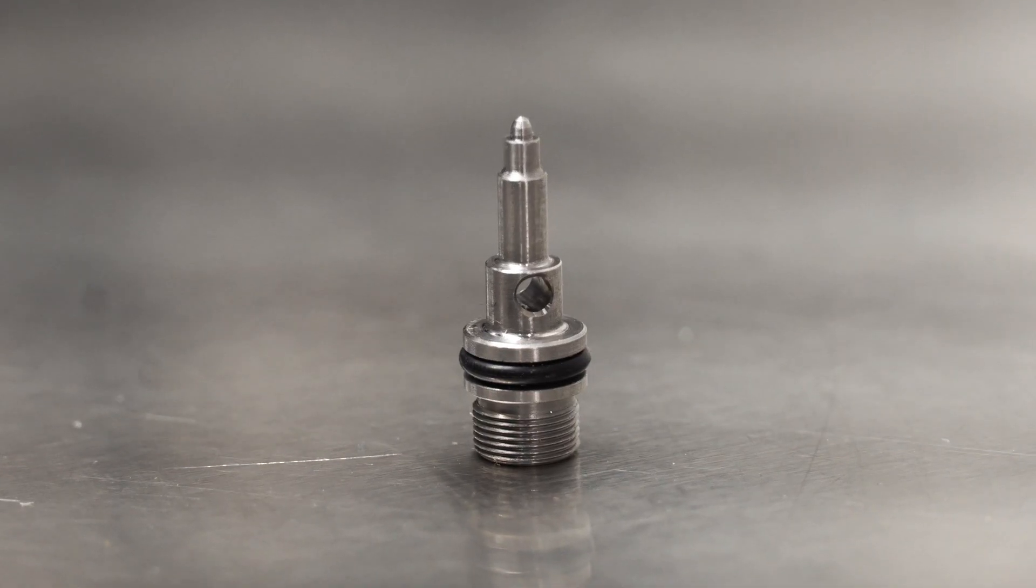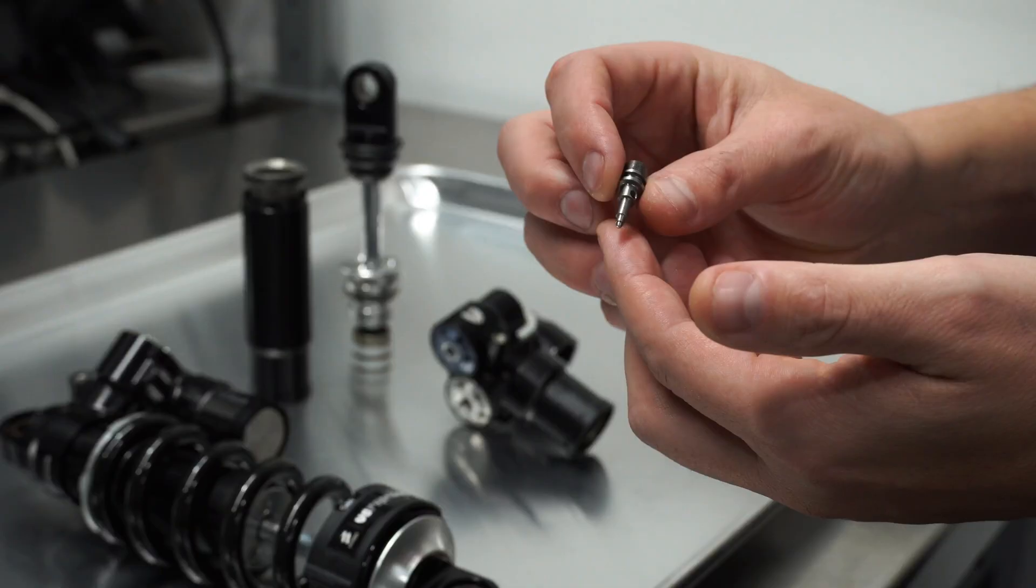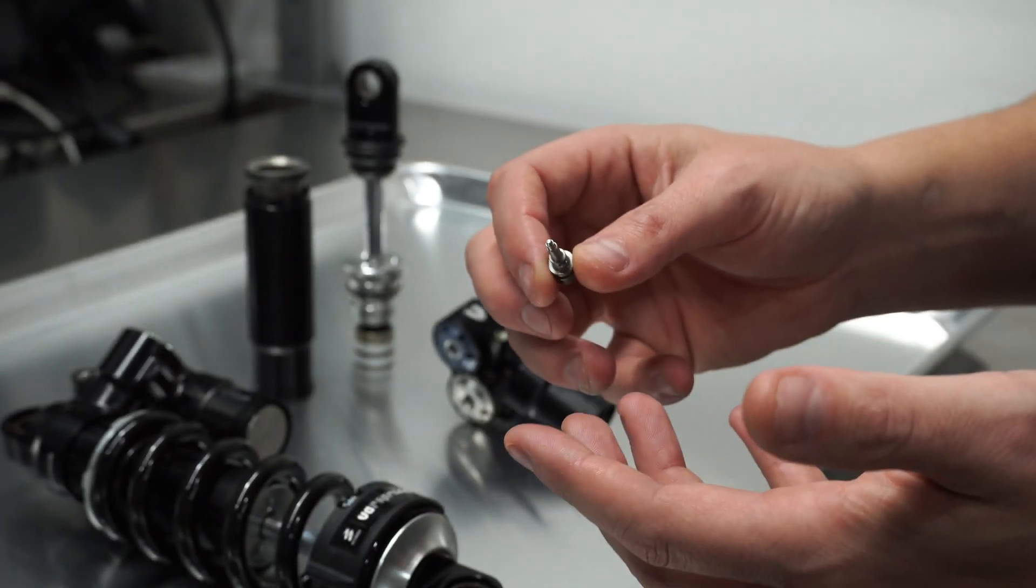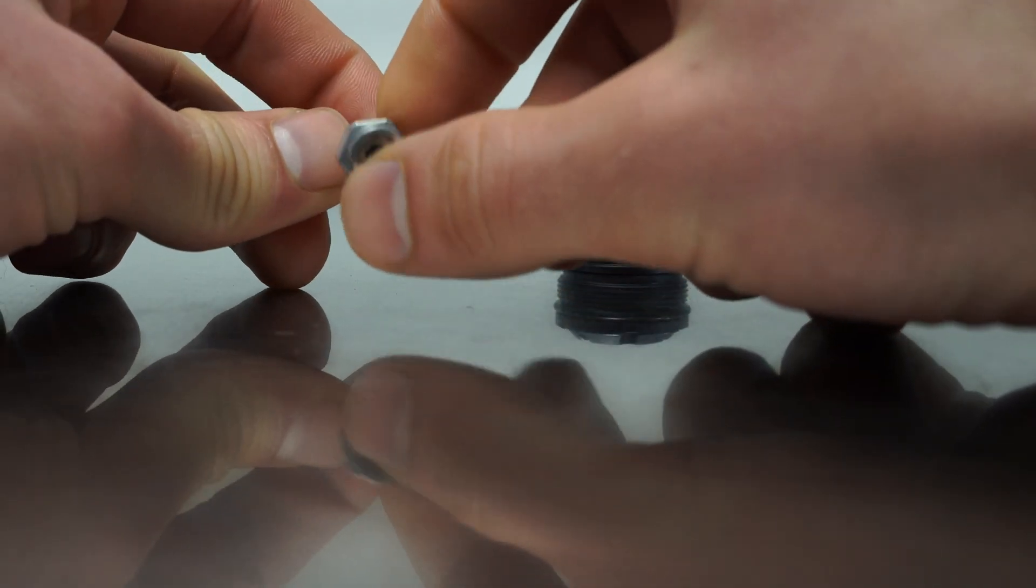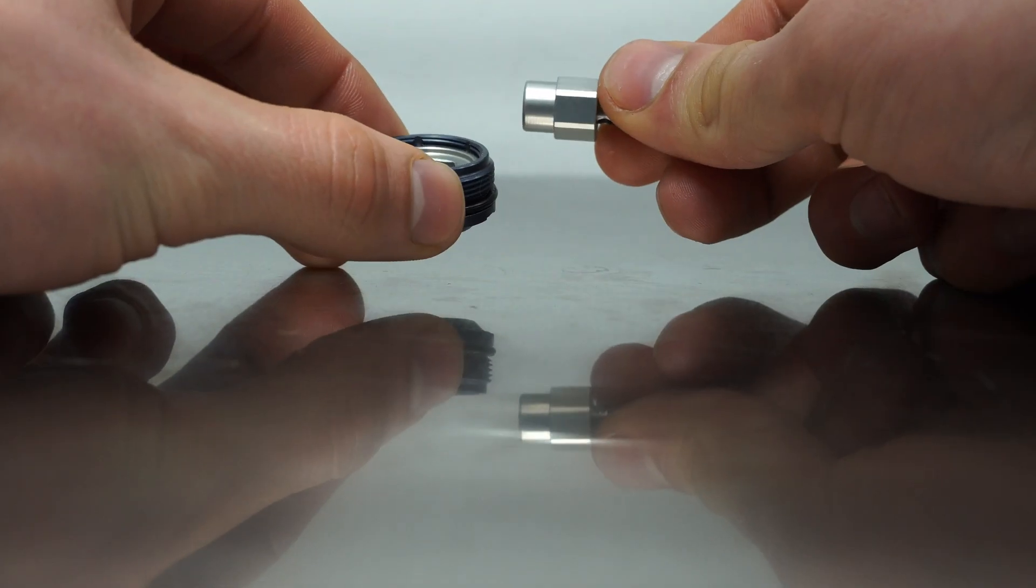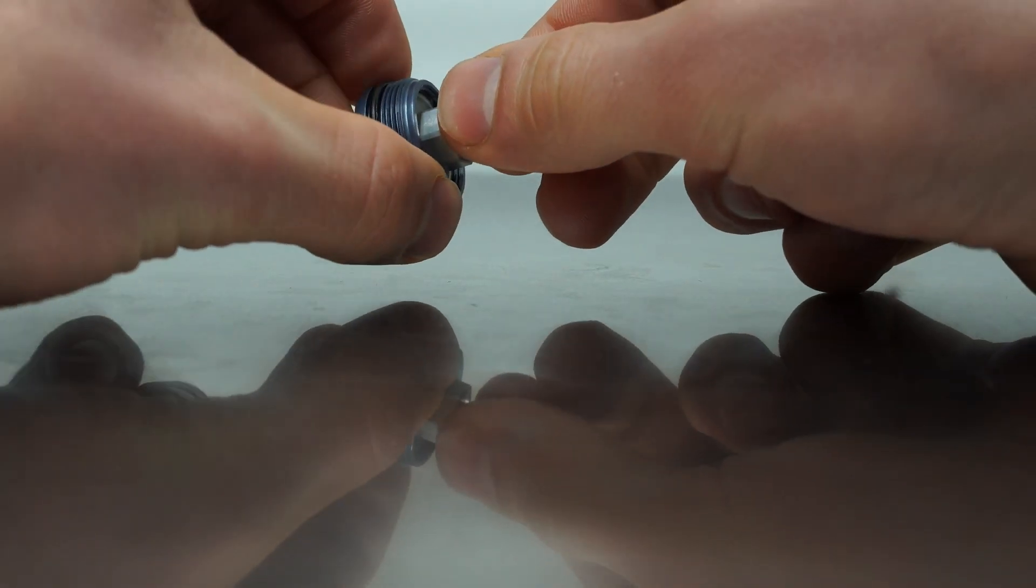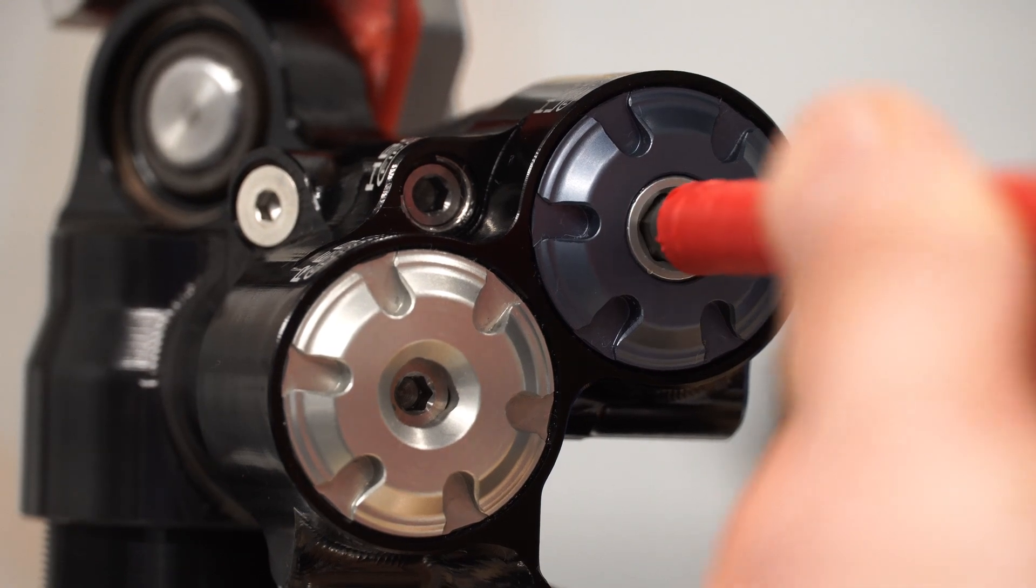So, within each of the damping circuits, we have a low-speed adjuster needle, which controls the size of the orifice that the bulk of the oil is flowing through at very low speeds when the shims of the high-speed circuit haven't opened yet. On the compression circuit, we also have a high-speed adjuster, which helps adjust the amount of high-speed damping we have, as well as adjusting the characteristics of the damper during the critical transitional velocities between low and high speeds. We'll dig into that a bit more later on.